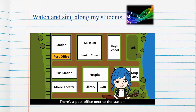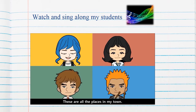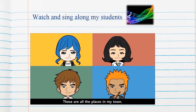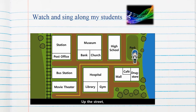There's a post office next to this station. There's a museum, a bank, and a church. There's a hospital, a gym, and a library. These are all the places in my town. Turn left, turn right, go straight ahead. Up the street, then back down, past places in my town.